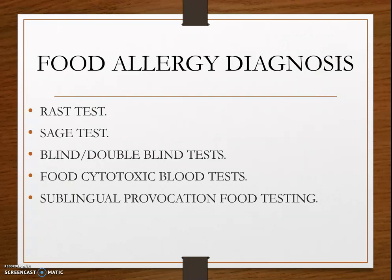The next section covers food allergy diagnosis. It is not easy to determine whether somebody has food intolerance or allergy, because the signs and symptoms overlap. Certain patterns in symptoms can help a doctor distinguish between the two. In the vast majority of cases, food intolerance symptoms take much longer to appear than food allergies. Some food allergy diagnostic tests include: RAST test, sage test, blind or double blind test, food cytotoxic blood test, and sublingual provocation food testing.